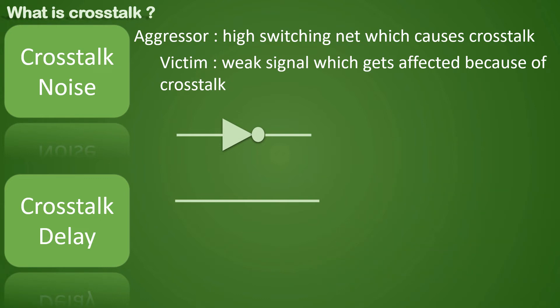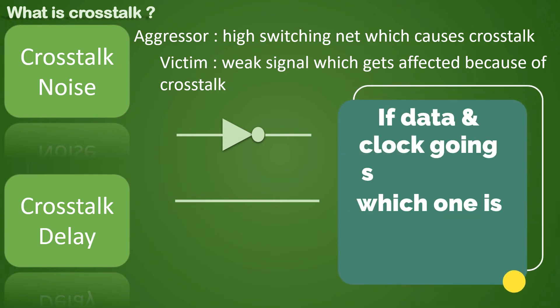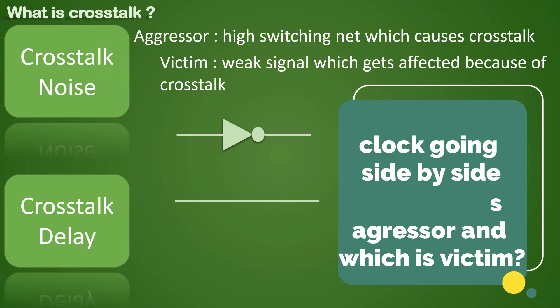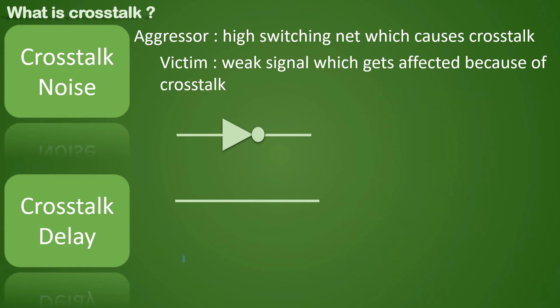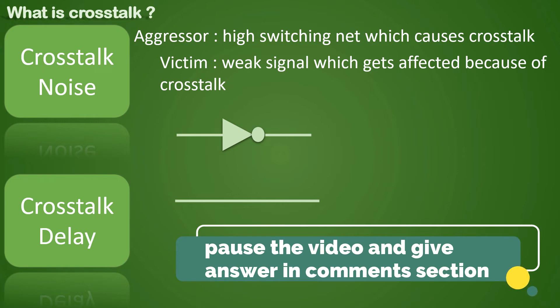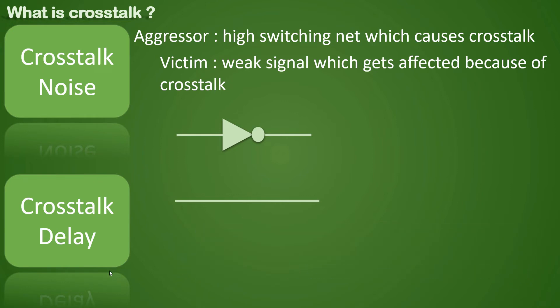The first question that arises is: if a data signal is going near a clock and crosstalk occurs, which net is the aggressor and which is the victim? The answer is the clock signal is the aggressor net, because it must be constantly switching and generally has more strength than the data signal. So the victim is typically the data signal.